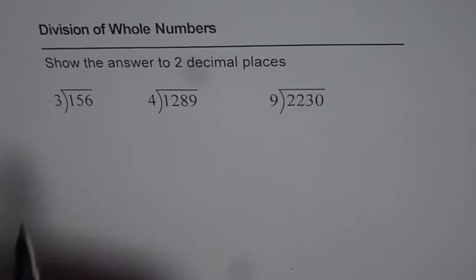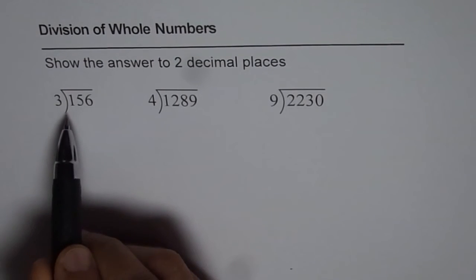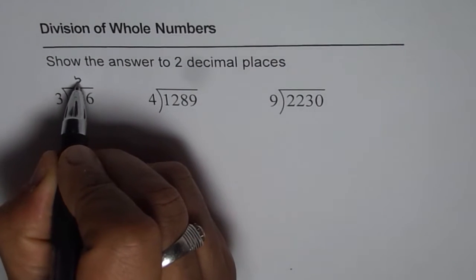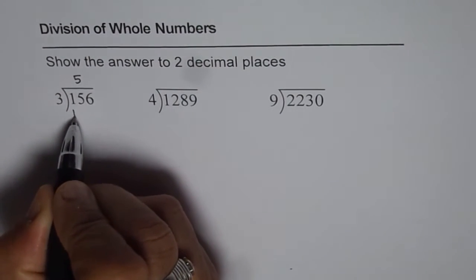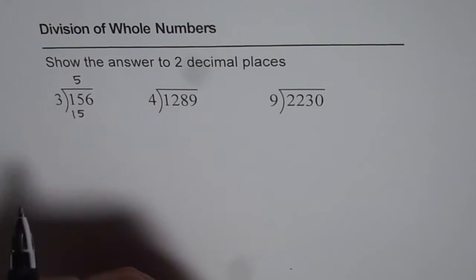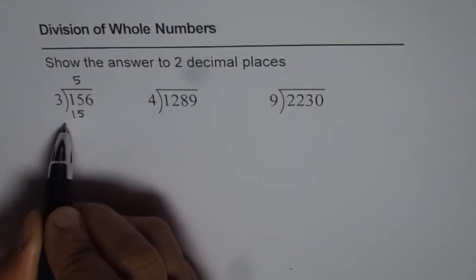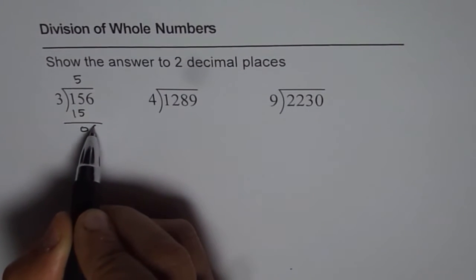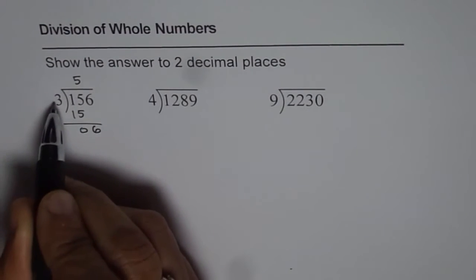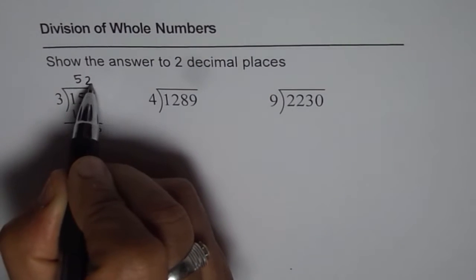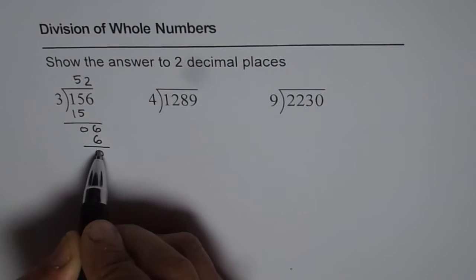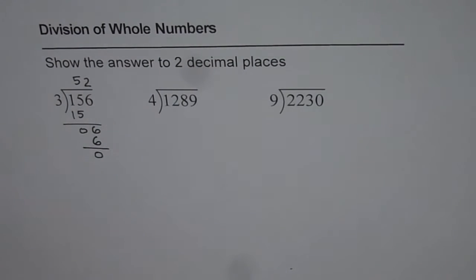156 divided by 3. You cannot divide once, you take two numbers. So you will divide 15 by 3. You know 3 times 5 is 15. When you write 5 in the quotient, 3 times 5 is 15. Take away 15 from 15, you get 0. Bring down the next number which is 6. 3 times 2 is 6. The remainder is 0, so your answer is 52.